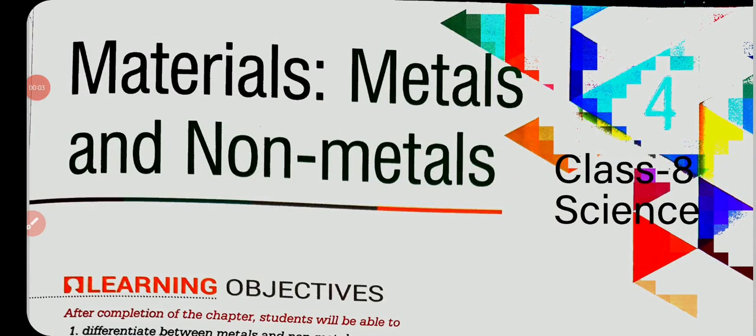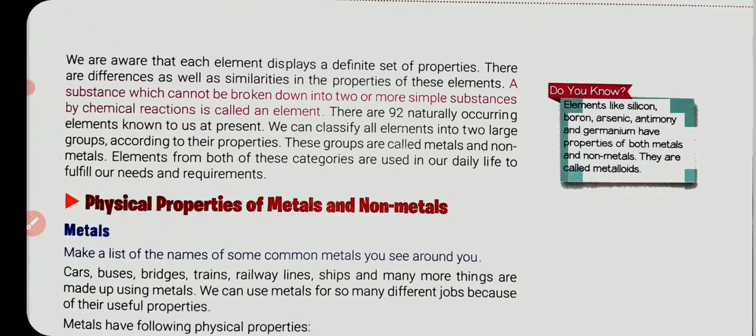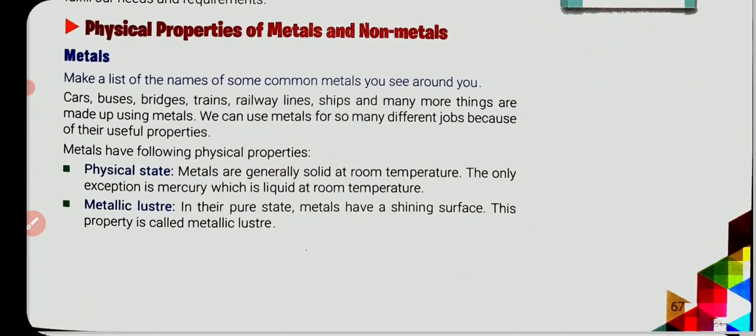Hello students, welcome back. This is the video of Class 8 Science. We are studying Chapter 4, which is Materials: Metals and Non-Metals. In this chapter we are studying about metals and non-metals and their properties. There are two types of properties: physical and chemical. In the previous video we studied about the physical properties of metals and non-metals, and today we are going to study about the chemical properties.